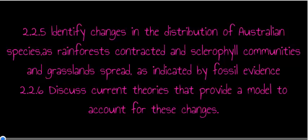In today's presentation we're going to look at how environmental change, brought about by the breakup of Gondwana and continental drift, has led to a change in the type of organisms present in Australia, both flora and fauna. Specifically, we're going to look at identifying changes in the distribution of Australian species as rainforests contracted and sclerophyll communities and grasslands spread, as indicated by the fossil record, and discuss current theories that provide a model to account for these changes.